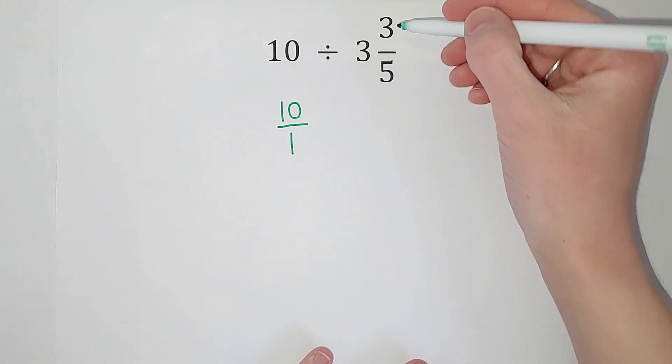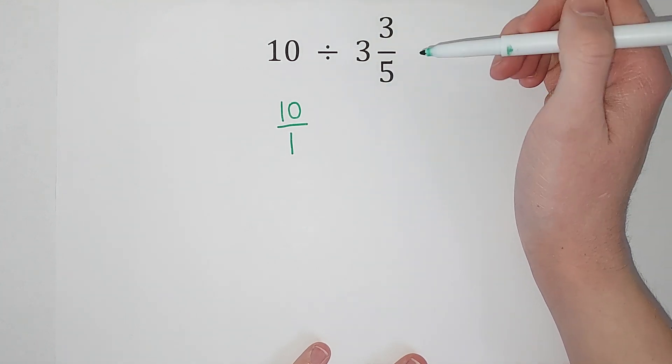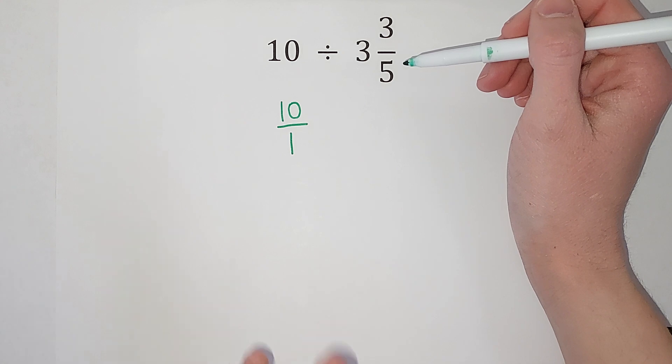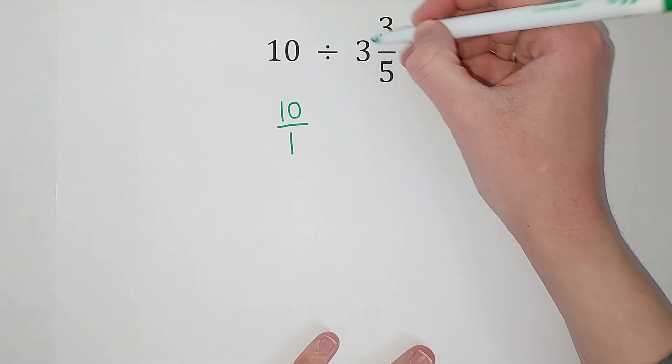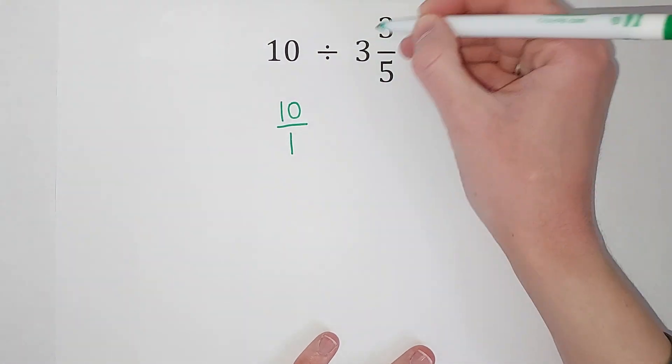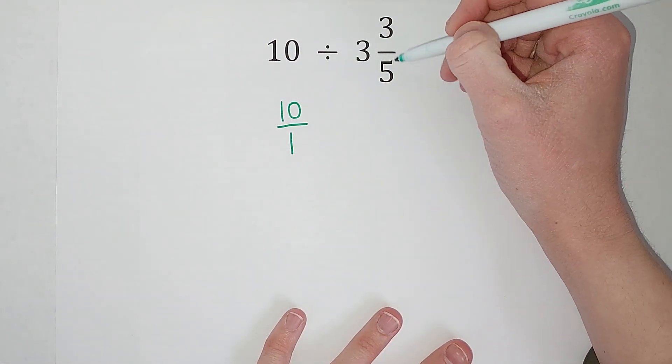And then I want to turn this mixed number into an improper fraction. That's when the top is bigger than the bottom, which is apparently very improper. So we are going to turn this into an improper fraction. I'll link a video in the corner if you need another example, but I'm also going to do it right here.